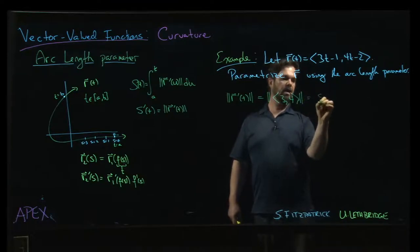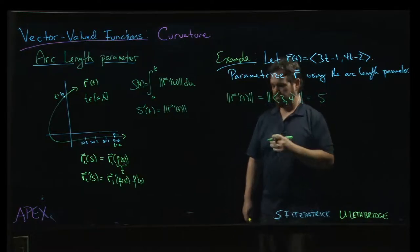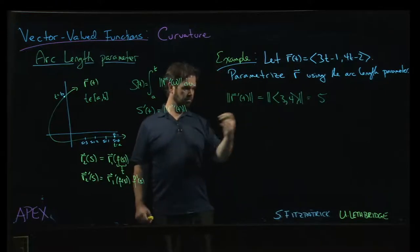So that vector 3, 4, well, we know that has magnitude 5. Usual Pythagorean theorem: 3, 4, 5. Great.